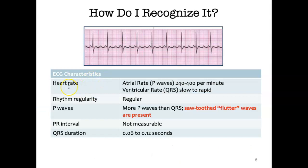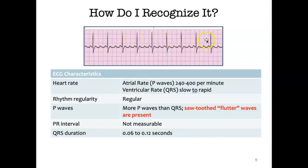To recognize atrial flutter: the atrial rate, which includes all the flutter waves, can be as fast as 240 to 400 beats per minute. What you actually measure is the ventricular rate — the QRS complexes. Counting here gives a ventricular rate of 90 beats per minute. The rhythm is fairly regular. There are more P waves than QRS complexes, and sawtooth or flutter waves are present. The PR interval can't be measured due to the irregularity. The QRS tends to measure 0.06 to 0.12 seconds — a normal range.